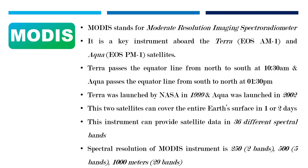These two satellites can cover the entire Earth's surface in one or two days. The instruments provide satellite data in 36 spectral bands. The spectral resolution of the MODIS instrument is 250 meters for two bands, 500 meters for five bands, and 1000 meters for 29 bands.